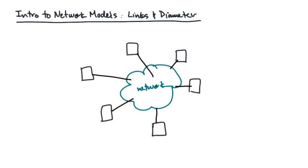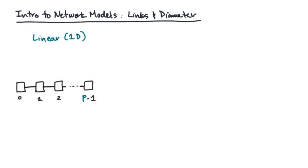Let's take three examples. The first is a linear or 1D network. It's a set of P nodes connected in a line.